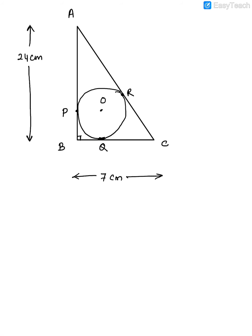Construction: join PO and OQ. First statement: radius is perpendicular to the tangent, so angle OPB = 90° and angle OQB = 90°. Because three angles in a quadrilateral are 90°, that quadrilateral is a rectangle. Also OP = OQ because they are radii of the circle. If adjacent sides are equal in a rectangle, it becomes a square. Proving this quadrilateral is a square is one major part of the problem.